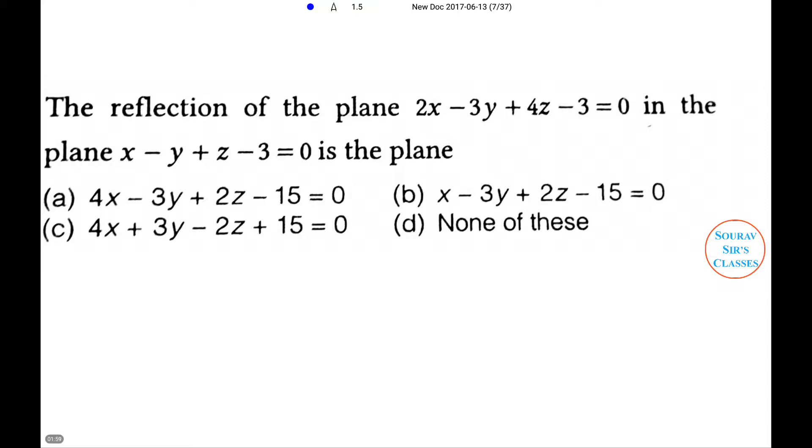Next problem: The reflection of the plane 2x minus 3y plus 4z minus 3 equals 0 is the plane... Here are the four options on your screen. Now solution: Reflection of plane 2x minus 3y plus 4z minus 3 equals 0 in the plane x minus y plus z minus 3 equals 0.